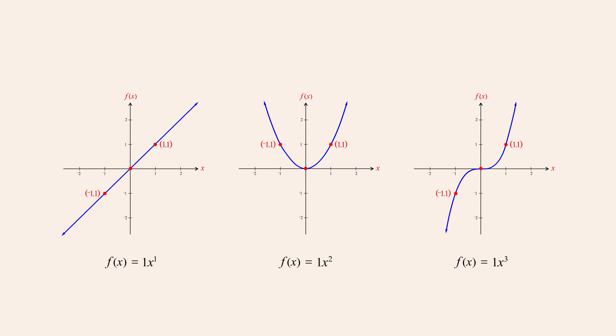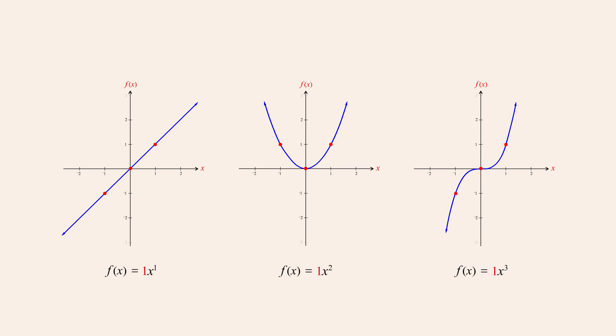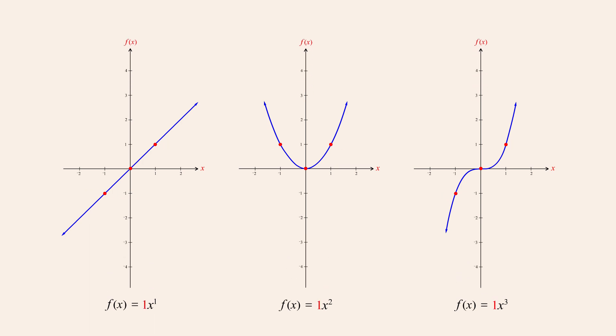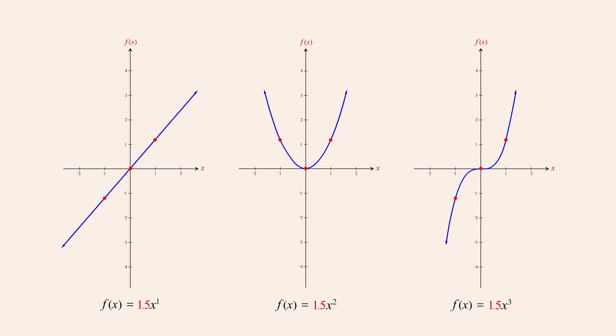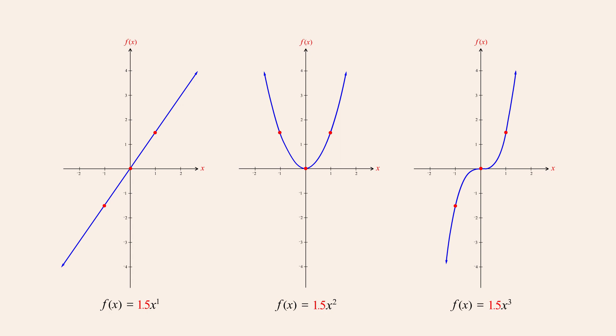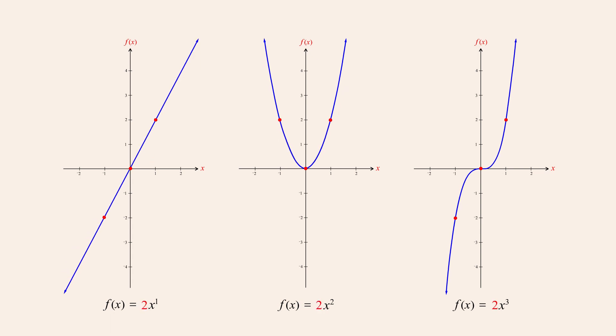So let's see what happens as we increase the values of the coefficients. As the coefficients increase, the graphs stretch vertically. The amount of stretching is proportional to the value of the coefficient. For example, when the coefficients reach a value of two, the graphs are expanded vertically by a factor of two. Decreasing the values of the coefficients causes the graphs to shrink vertically.